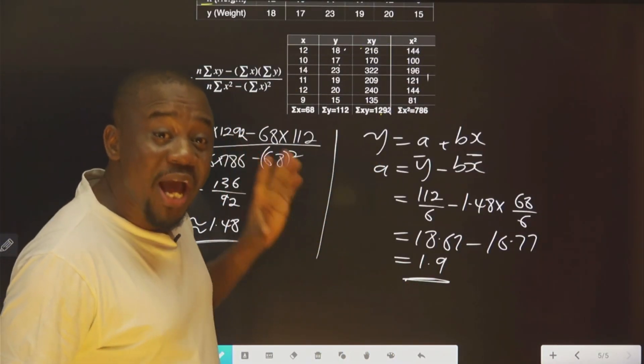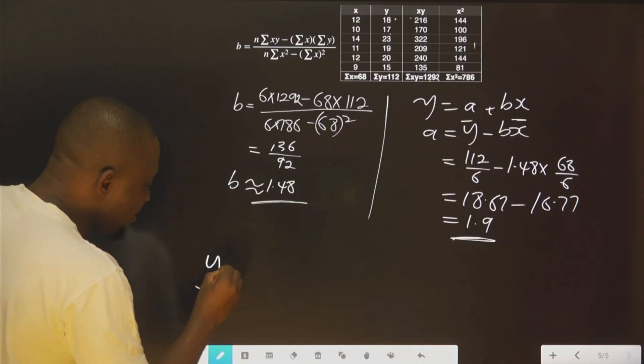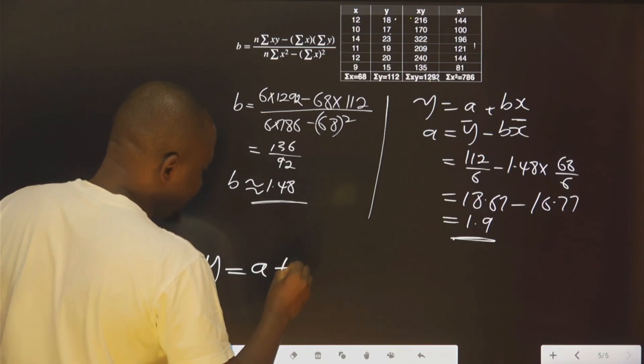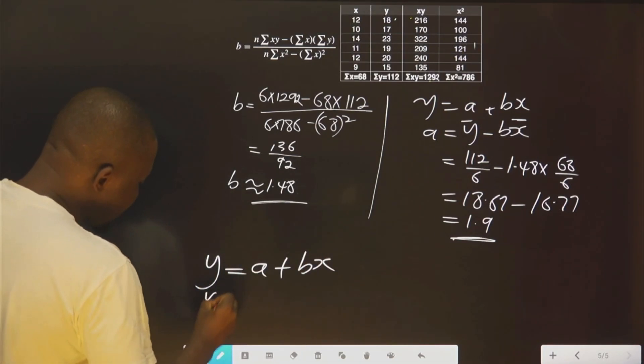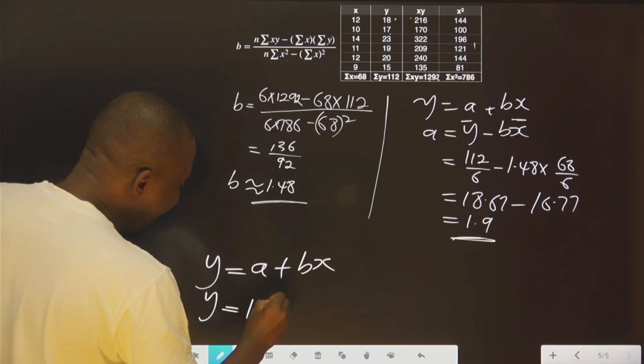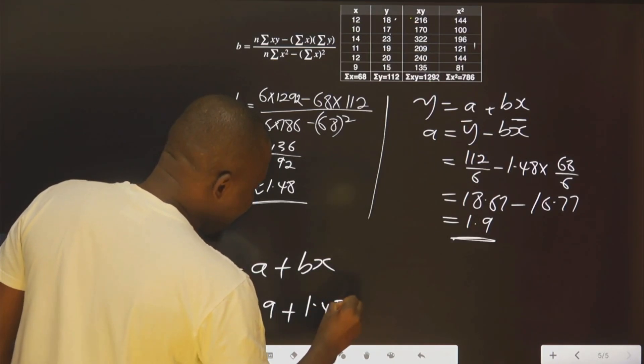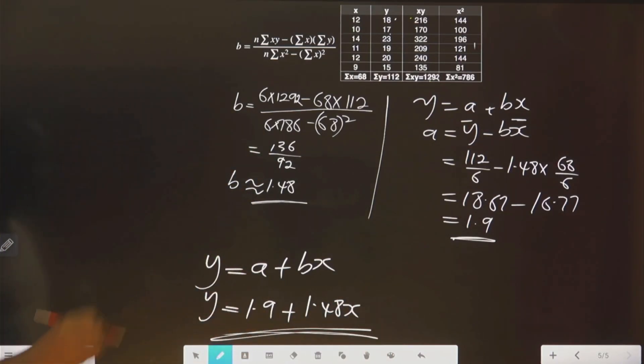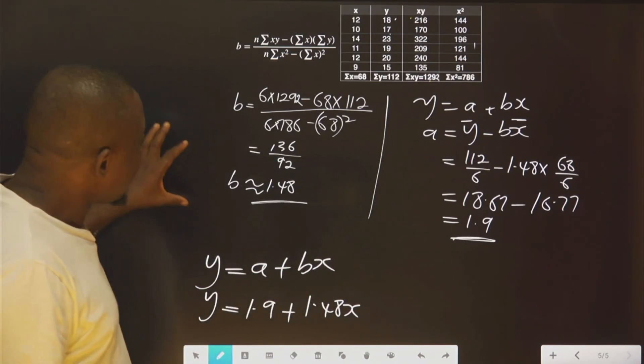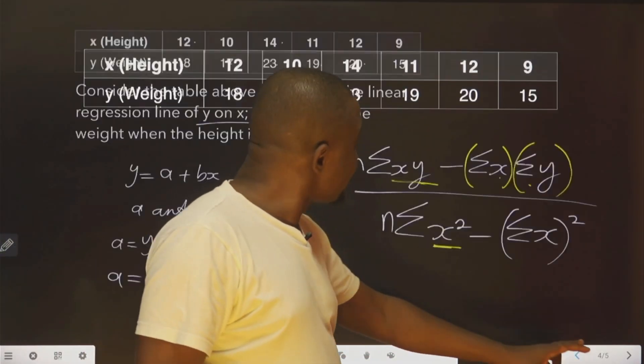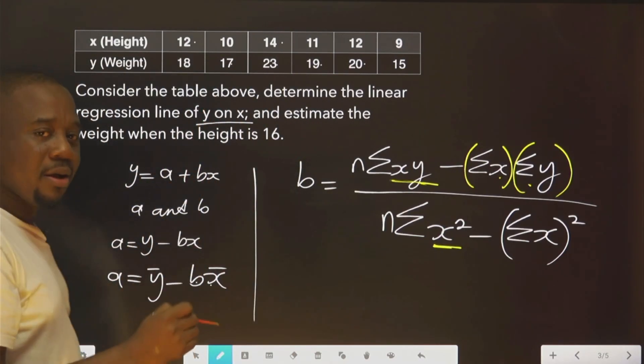So with this information we have now, we can go back to this regression line. Then I compute the values. The first one is A. A is 1.9 plus B, 1.48x. This is the formula. So this is the regression line of y on x.